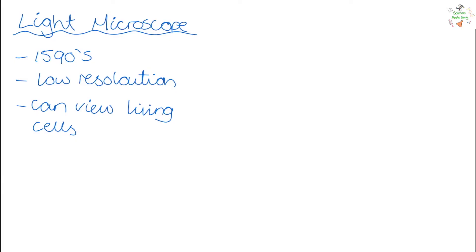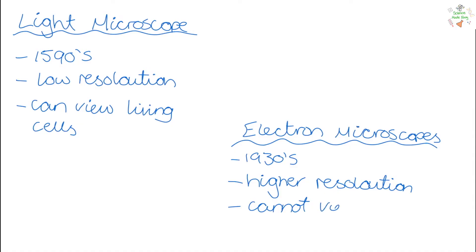The other type of microscope is electron microscopes. They were invented in the 1930s. They work by passing beams of electrons through the specimen, so they have a much higher resolution. However, they cannot view living cells. This is because they work in a vacuum, so the cells cannot survive.